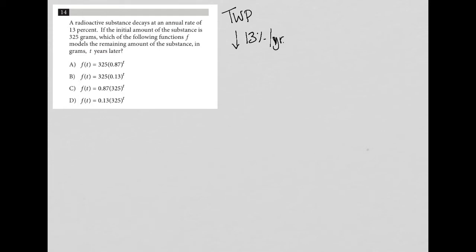If the initial amount of the substance is 325 grams, I'm going to write that down as well, 325 grams, which of the following functions F models the remaining amount of the substance in grams T years later.